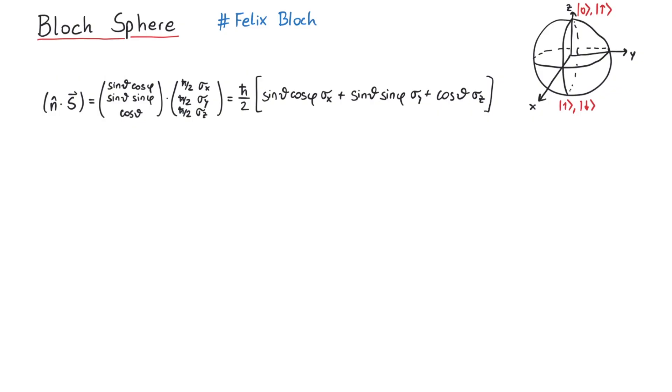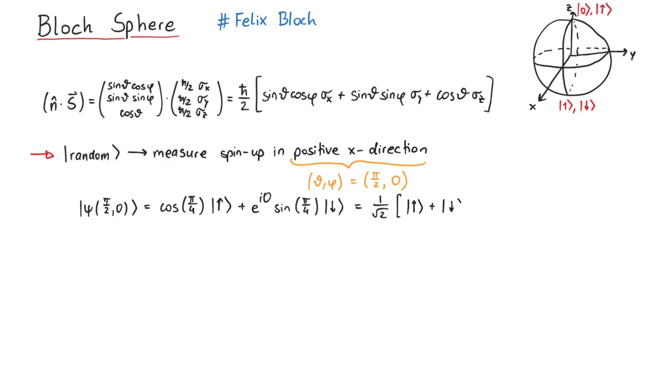Now we can solve problems like this one. Imagine that you have a random mix of spin-up and spin-down states. You now perform a measurement and measure spin-up in the x-direction. What is the quantum state after the measurement? To find out, we need to know the direction of the positive x-axis, which in spherical coordinates is pi over 2 and 0. Using these values in the Bloch state yields 1 over the square root of 2 times up plus down.